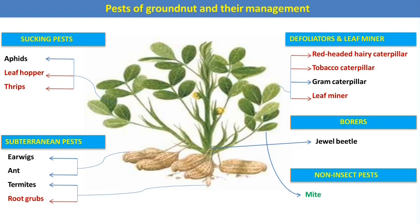The pest categories include sucking pests, defoliators, subterranean pests, borers, and non-insect pests. In case of groundnut, the sucking pests, defoliators, and subterranean pests are the most major and important pests which reduce the yield considerably. Let us start one by one.